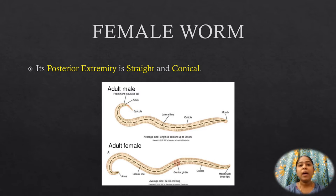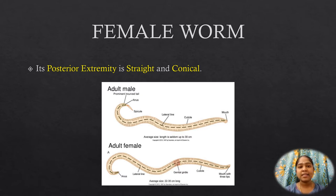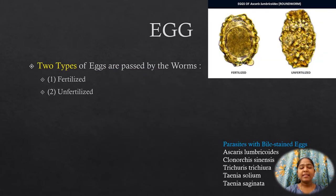The female worm is larger than the male, measuring 20 to 40 centimeters in length with a thickness of 3 to 6 millimeters. The posterior extremity is straight and conical. The vulva is situated near the junction of the anterior and middle third of the body. A single worm lays up to 2 lakh eggs per day, passed in the feces. Eggs laid by the female are of two types: fertilized and unfertilized.